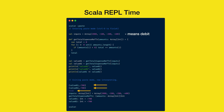So what does this mean? It means that the function getTotalExpenseRefTr is a referentially transparent function, because as per the definition of referential transparency, if we replace the function calls with their values, the program behavior still remains the same, no matter how many times you call it.